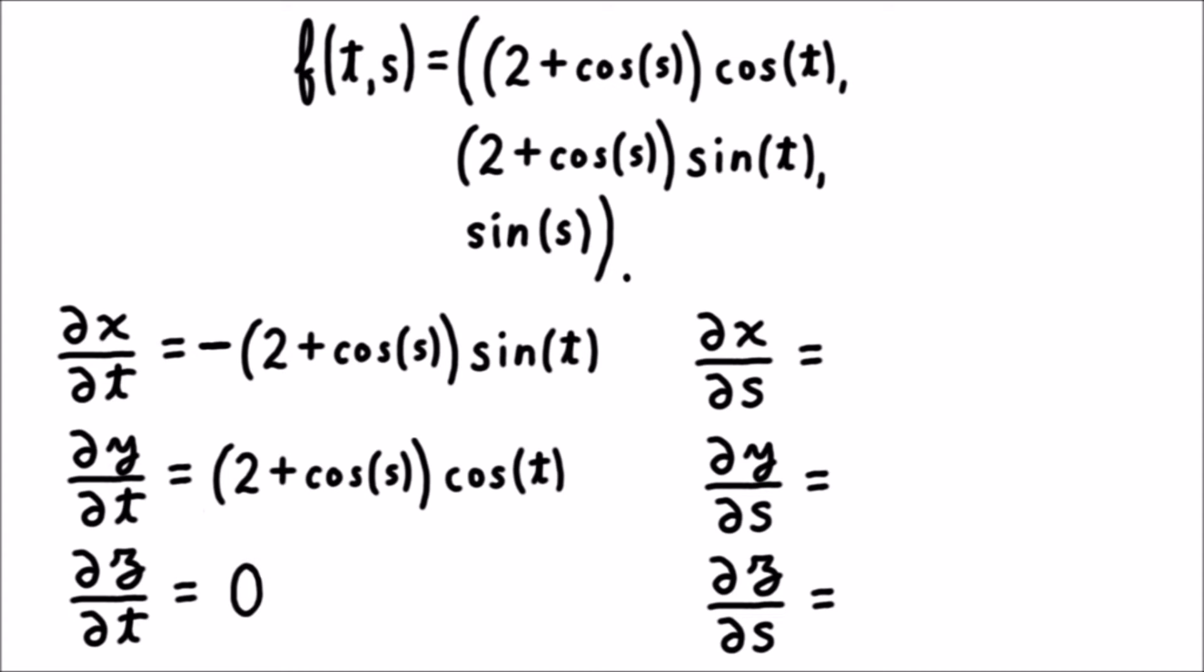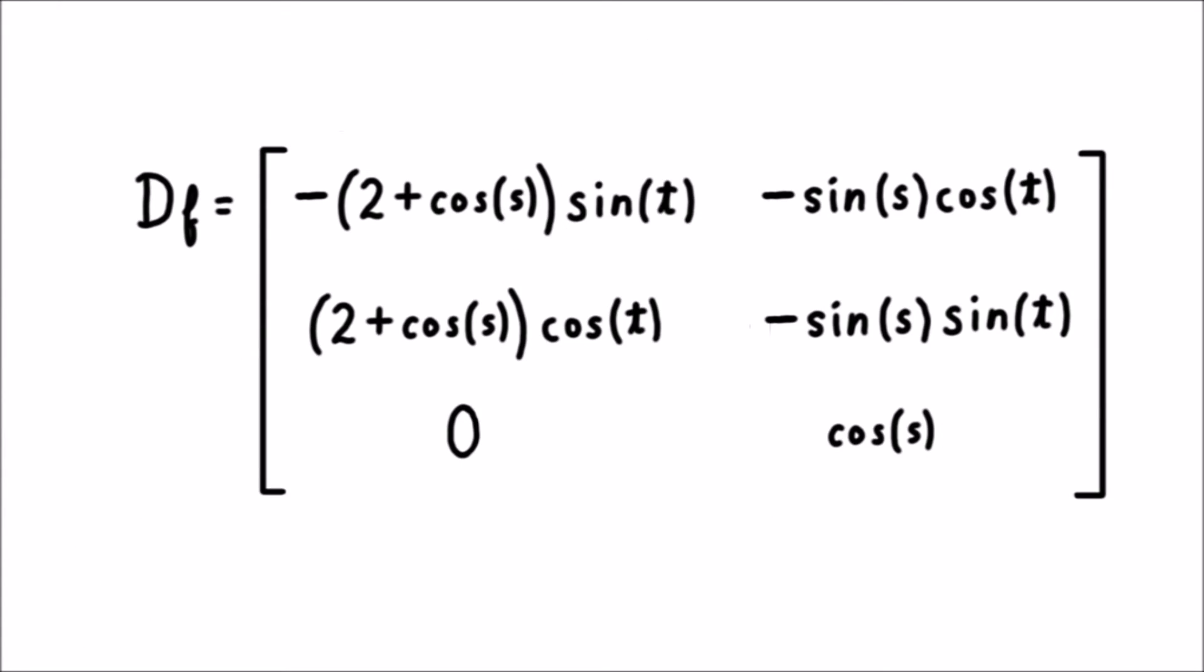Next, we take the partial derivatives with respect to s. ∂x/∂s is -sin s × cos t, ∂y/∂s is -sin s × sin t, and ∂z/∂s is cos s. Now we have a 3 by 2 matrix full of partial derivatives.